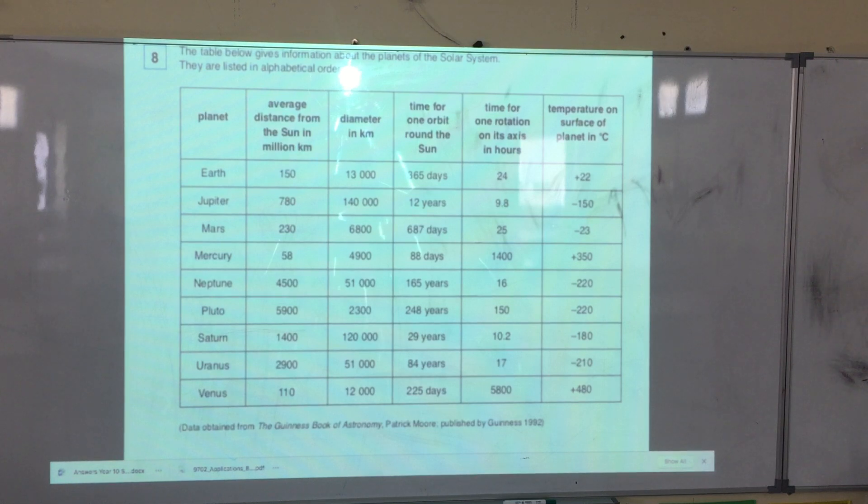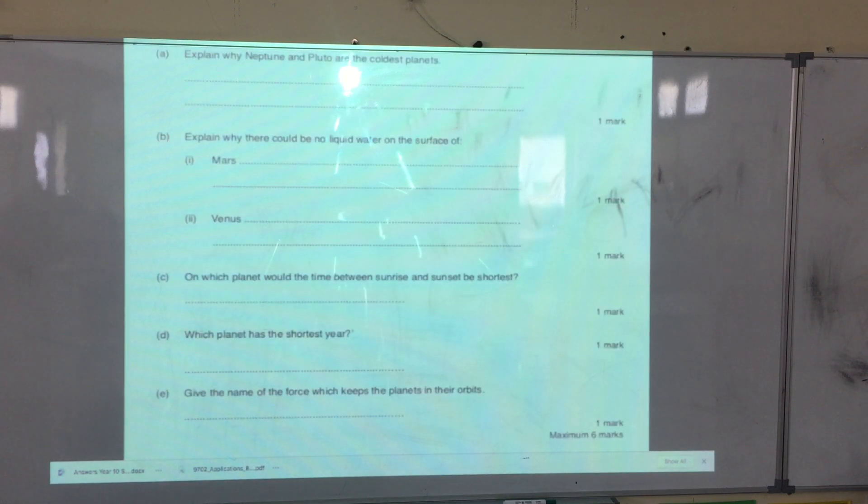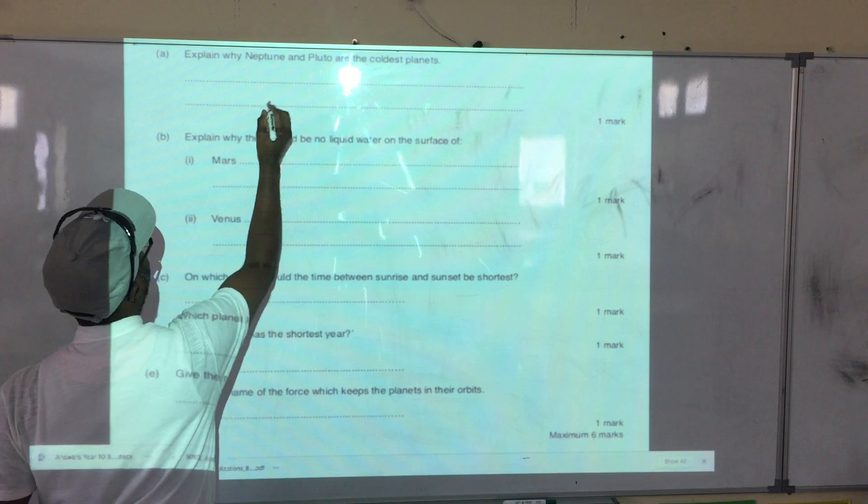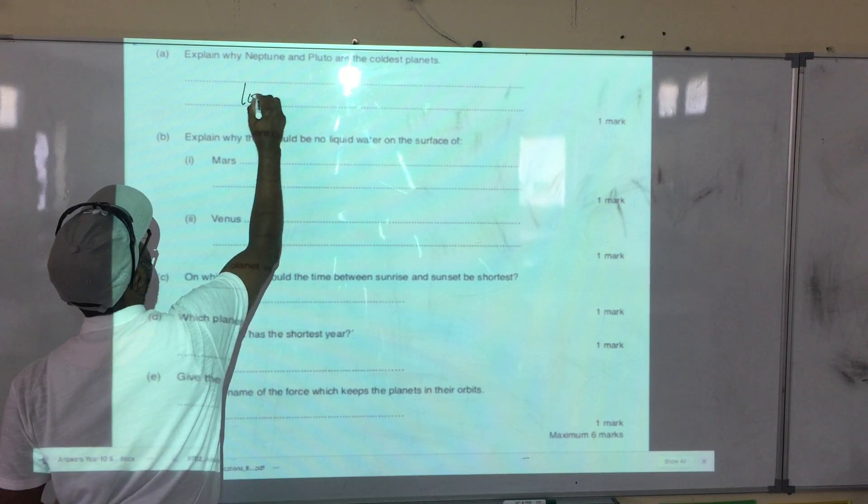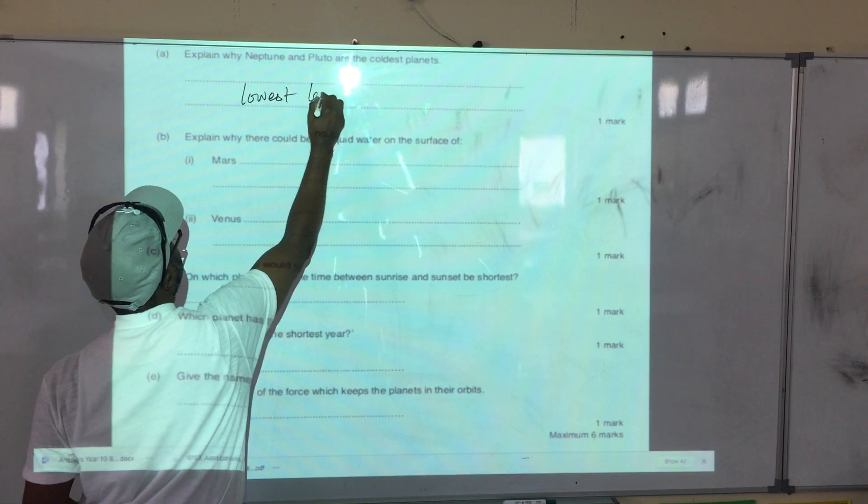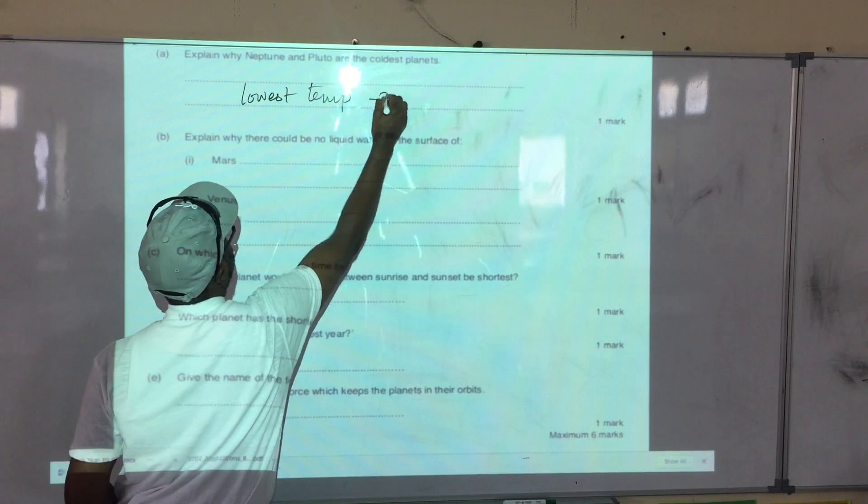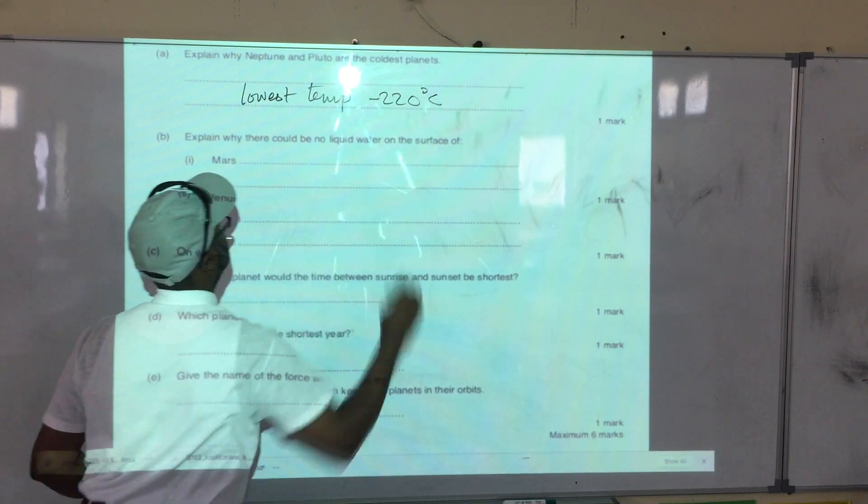When you compare that temperature to the rest, it turns out to be the coldest - the lowest temperature, which is minus 220. Therefore, they are the coldest because they have the lowest temperature of minus 220 degrees Celsius.